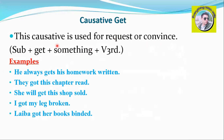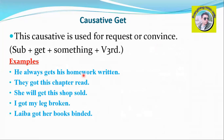The structure is: Subject + get + something (not someone) + third form of the verb. For example: 'He always gets his homework written.' This means he always gets his homework done — he always gets it written.